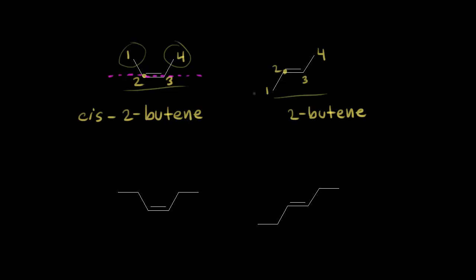On the right, when we look at those methyl groups, these two methyl groups are on opposite sides of the double bond. I'll draw a line in here to make it easier to see that those two methyl groups are on opposite sides. We call that trans, so this is the trans isomer. So we have cis-2-butene and trans-2-butene.